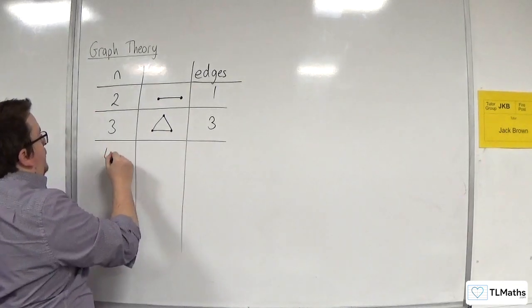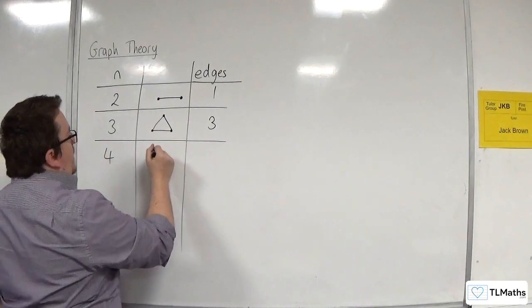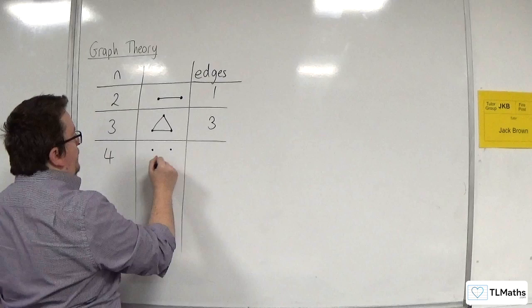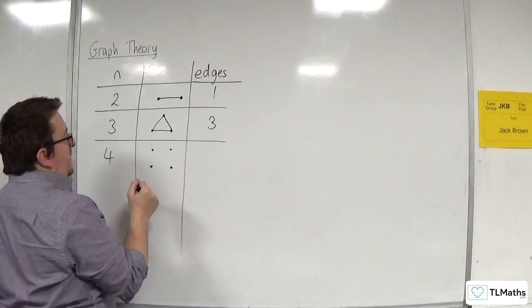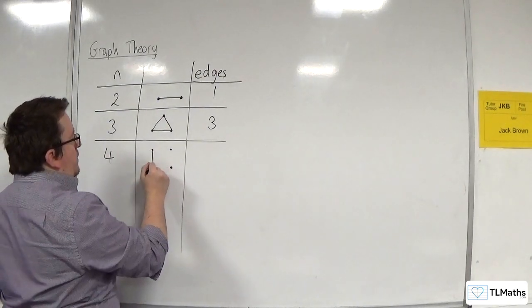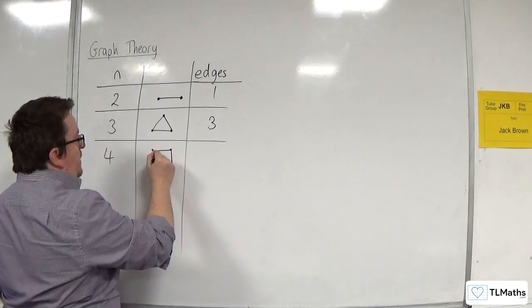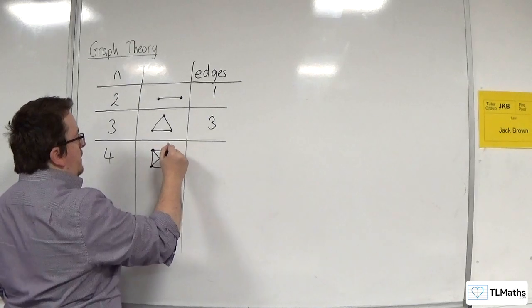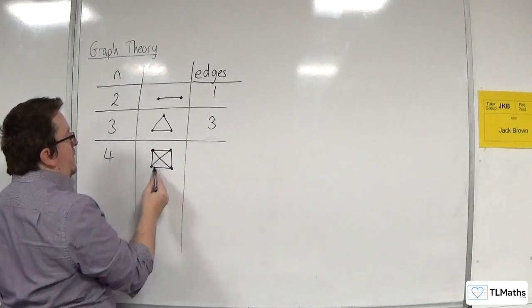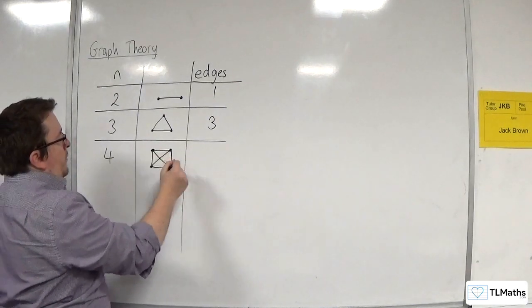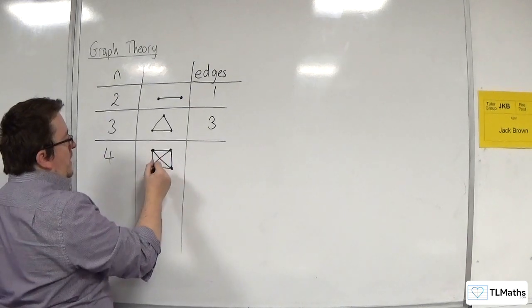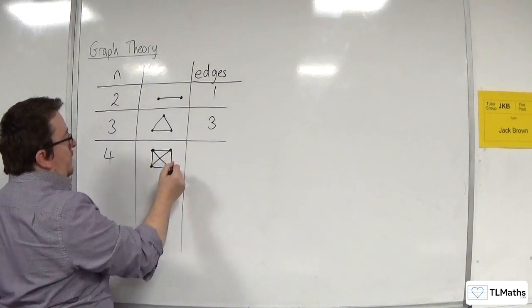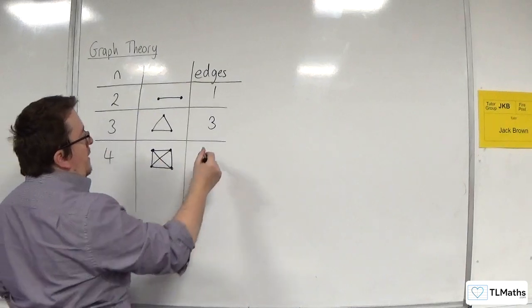Then, for n is 4, we would have four nodes, and each one must be connected to each other one. So, 1, 2, 3, 4. Then these two must be connected, and those two must be connected. So how many do I have? Well, I've got 1, 2, 3, plus 1, 2, plus 1. So, in total, there are six.